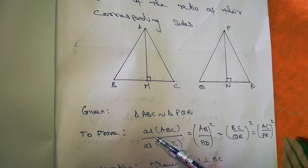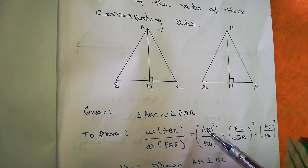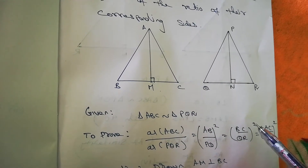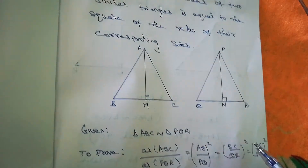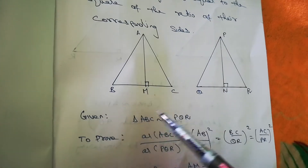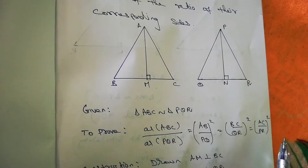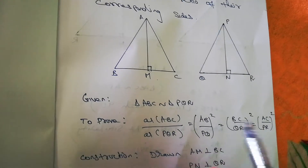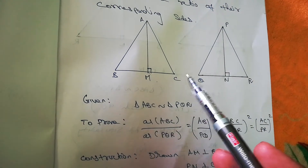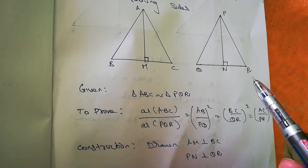We have to prove that area of triangle ABC by area of triangle PQR equals (AB/PQ)² = (BC/QR)² = (AC/PR)². Given that triangle ABC is similar to triangle PQR. Construction: draw AM perpendicular to BC and draw PN perpendicular to QR.